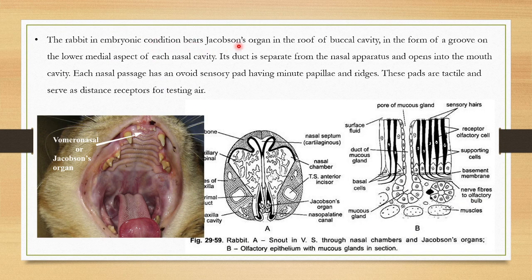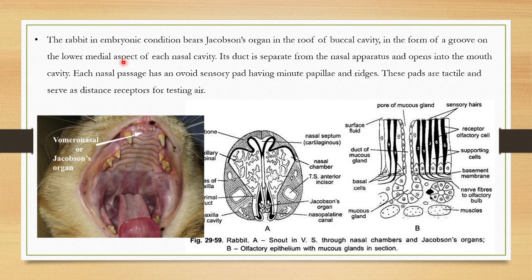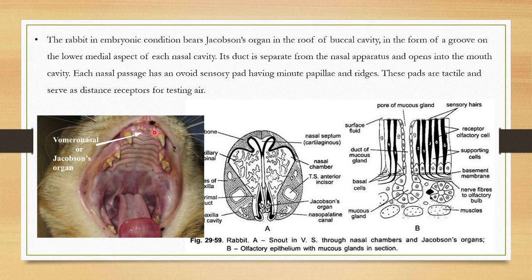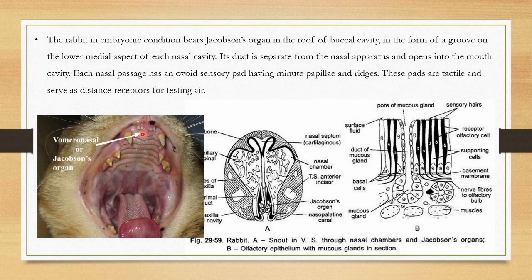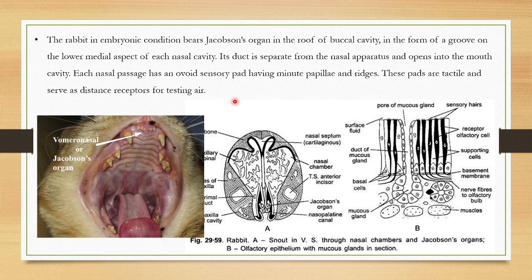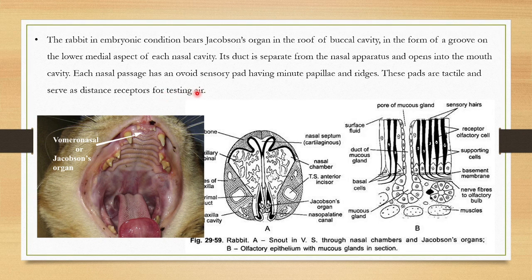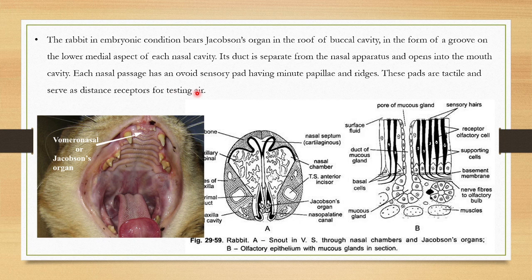In embryonic condition, there is a specialized organ called Jacobson's organ in the roof of the buccal cavity, in the form of a groove on the lower medial aspects of each nasal cavity. It is separate from the nasal apparatus and opens into the mouth cavity. It has many minute papillae and ridges. These pads are tactile and serve as a distance receptor for testing the air. The function is testing of air.